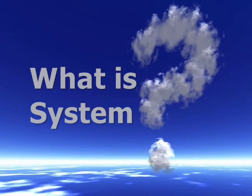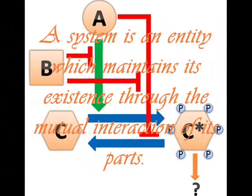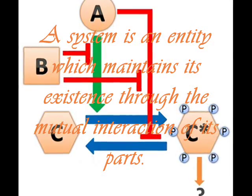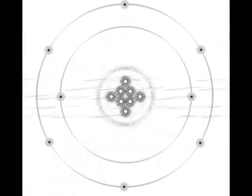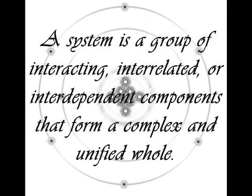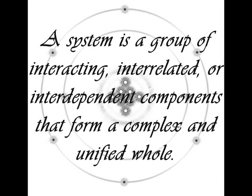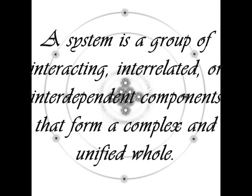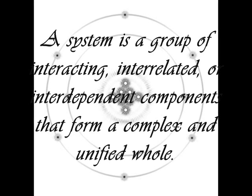What is a system? A system is an entity which maintains its existence through the mutual interactions of its parts. Also, a system is a group of interacting, interrelated, or interdependent components that form a complete and unified whole.